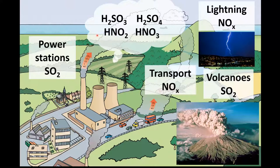Once they have been produced, these gases react with water in the atmosphere to produce four acids. When sulfur dioxide reacts with water we have the formation of H₂SO₃, which is sulfurous acid, or H₂SO₄, which is sulfuric acid. When oxides of nitrogen react with water we have the formation of HNO₂, which is nitrous acid, or HNO₃, which is nitric acid.